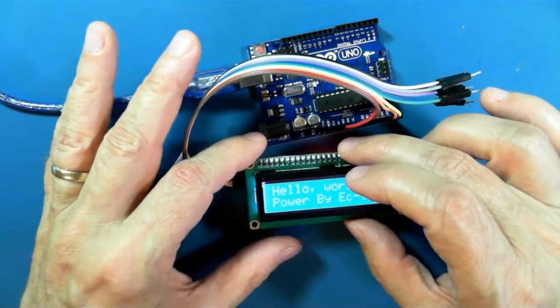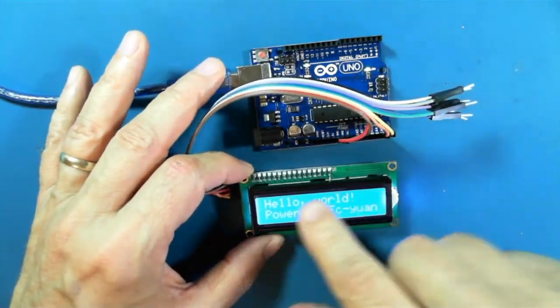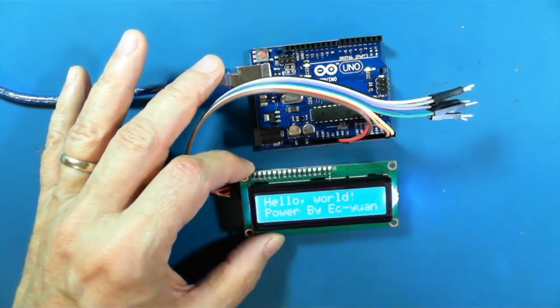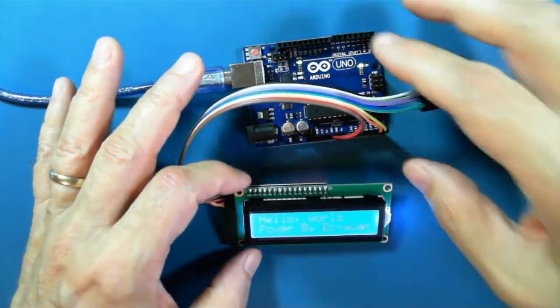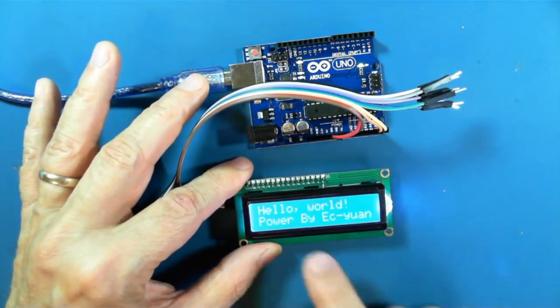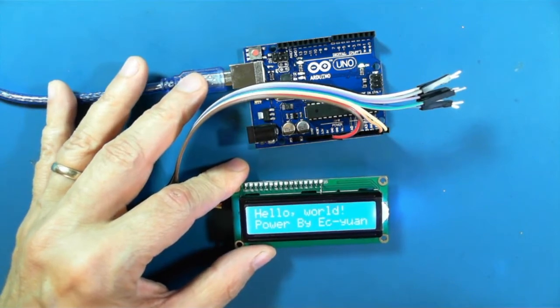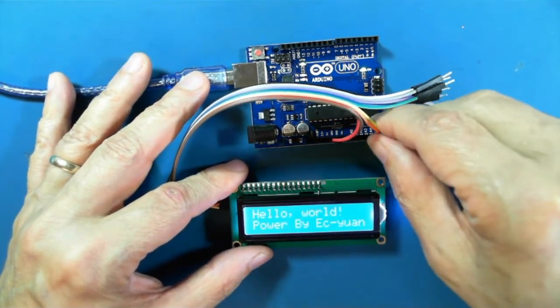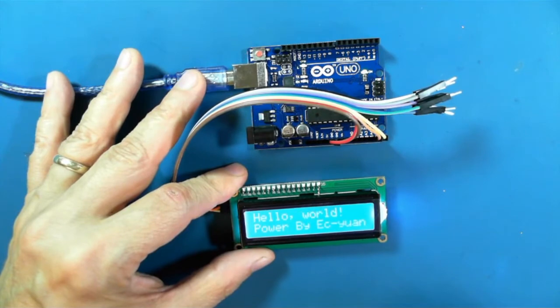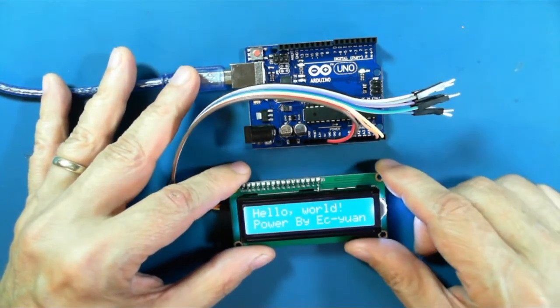So that's just pulled out of the library. This text 'Powered by EC Yuan' must be the original program of the hello world program that we're going to load up, so we know it works.